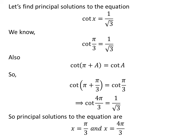So, the principal solutions to the equation cotangent of x is equal to 1 upon square root of 3 are pi upon 3 and 4 times pi upon 3.